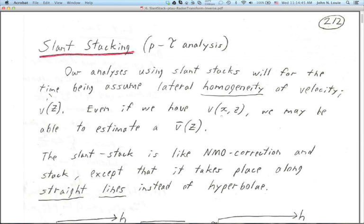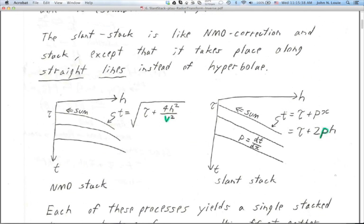If we have some slow X dependence of velocity — some gradual, smooth lateral velocity changes — we can estimate a V-bar-Z, a horizontally averaged velocity that's not too far from the true laterally variable velocity, and effectively implement the thin lens term as we did in 706. We can still talk about slant stack. Things will be fairly simple under this V-bar-Z approximation.